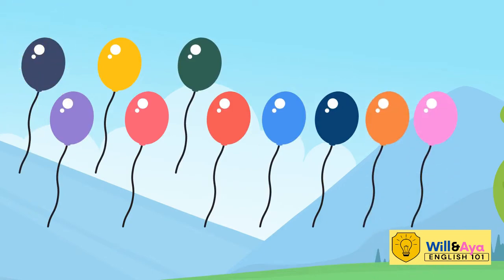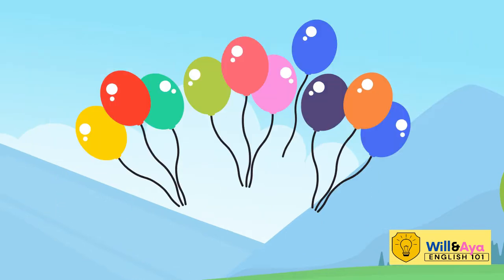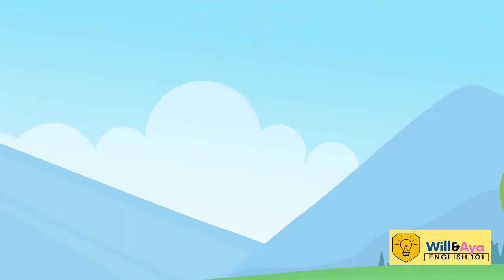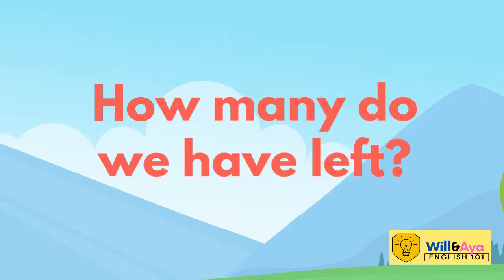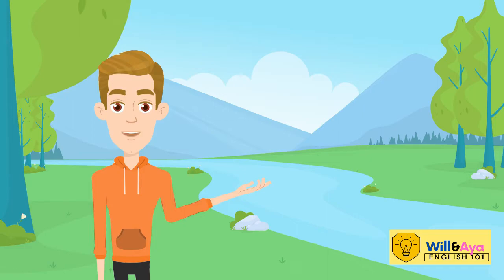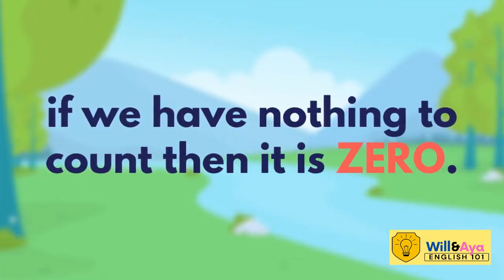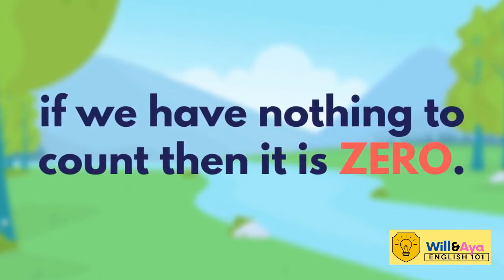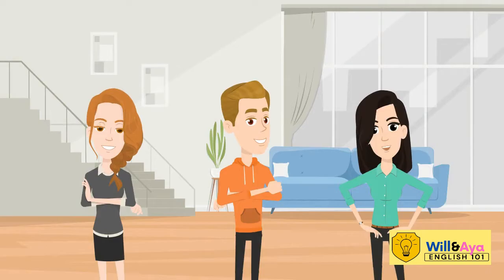One, two, three, four, five, six, seven, eight, nine, ten — now we have ten balloons. Our balloons just flew to the sky! How many balloons do we have left? Do you see any balloons? So if we have nothing to count, then it's zero.